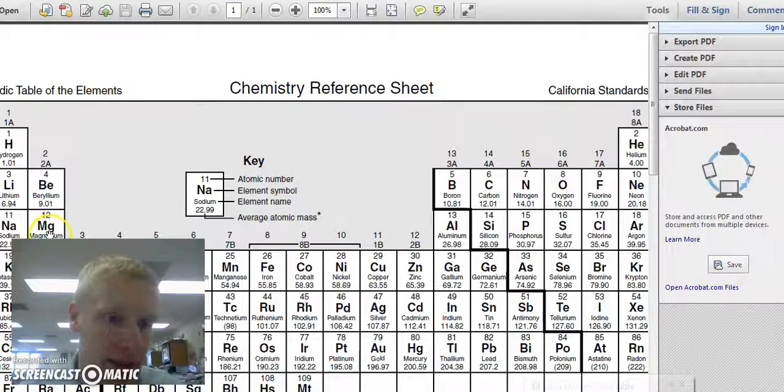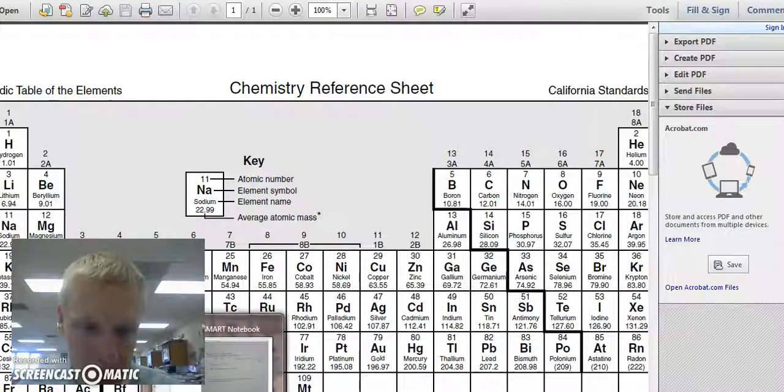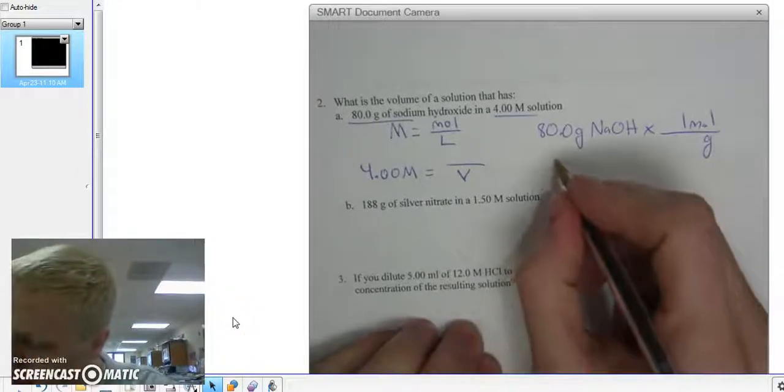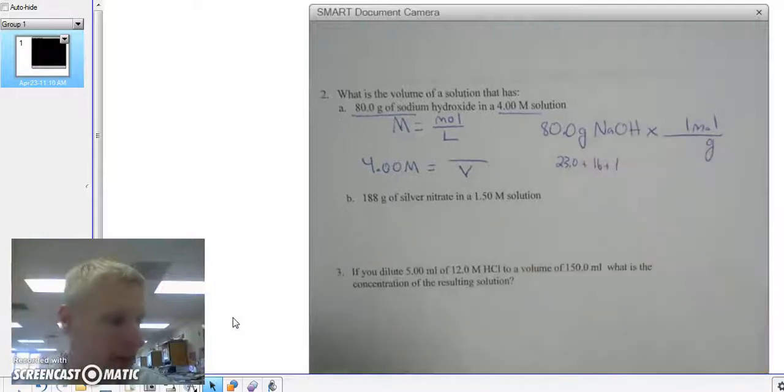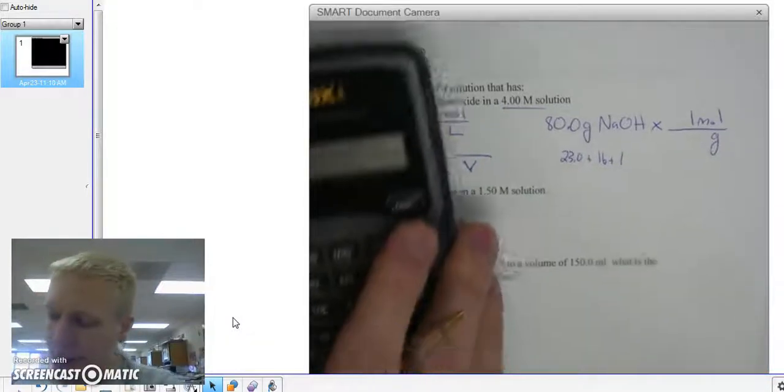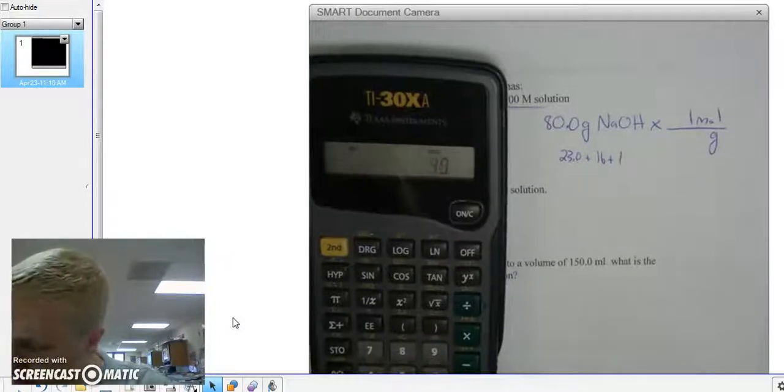Sodium is right over here, 23.0. Oxygen is 16, and hydrogen is 1. So we had 23.0 plus 16 plus 1. I think I have my calculator with me, since this is chemistry class. 23 plus 16 plus 1 is 40.